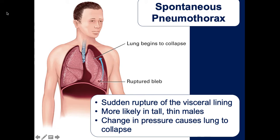Give high-flow oxygen, listen to lung sounds, and transport to a trauma center. Most spontaneous pneumothoraces heal on their own, but if the bleb or hole is large enough, surgical repair or removal of that portion of the lung may be required.